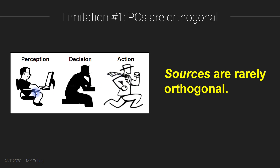This orthogonality constraint makes principal components analysis of limited use for source separation of datasets where we have correlations between different sources.